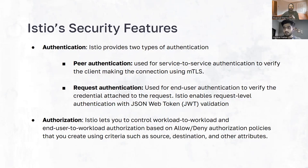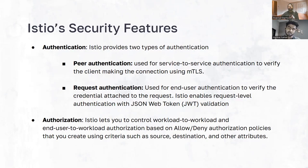There are three types of MTLS modes: permissive, strict, and disabled. By default, the mode is permissive, which means if a client is sending a request to a server or service and that client doesn't have any certificate with it, Istio will still allow that — it allows both plain and MTLS traffic. That is what we can control through peer authentication.